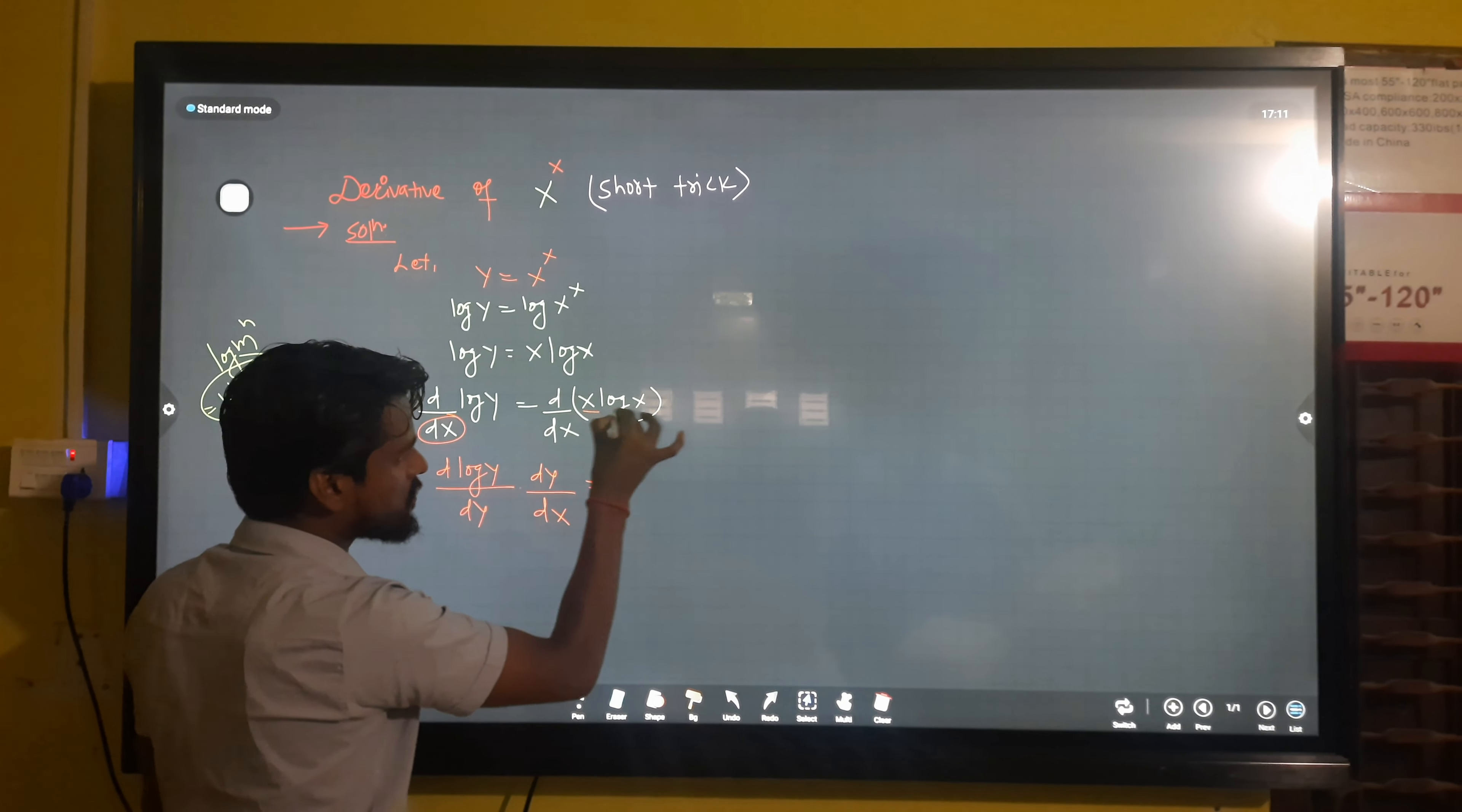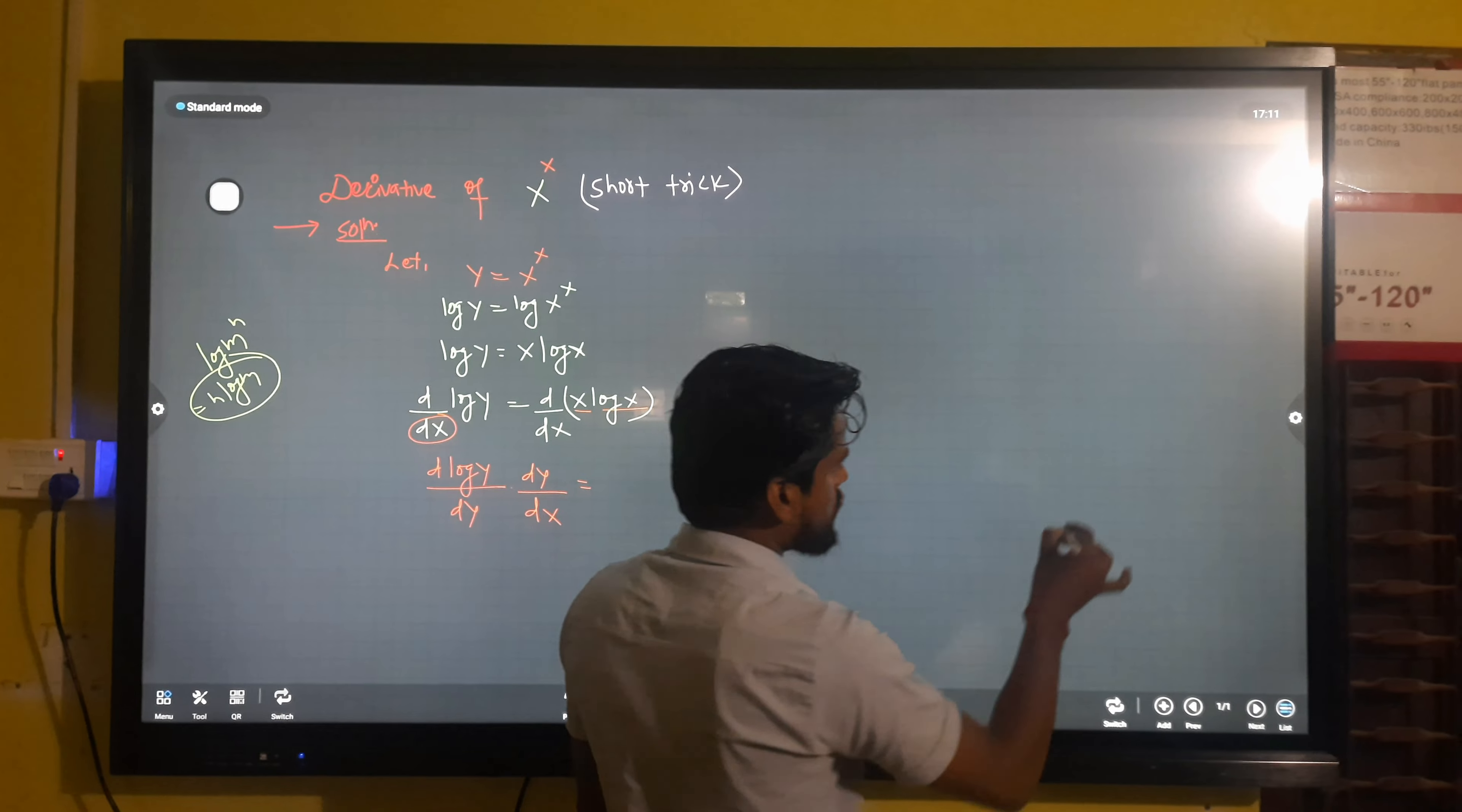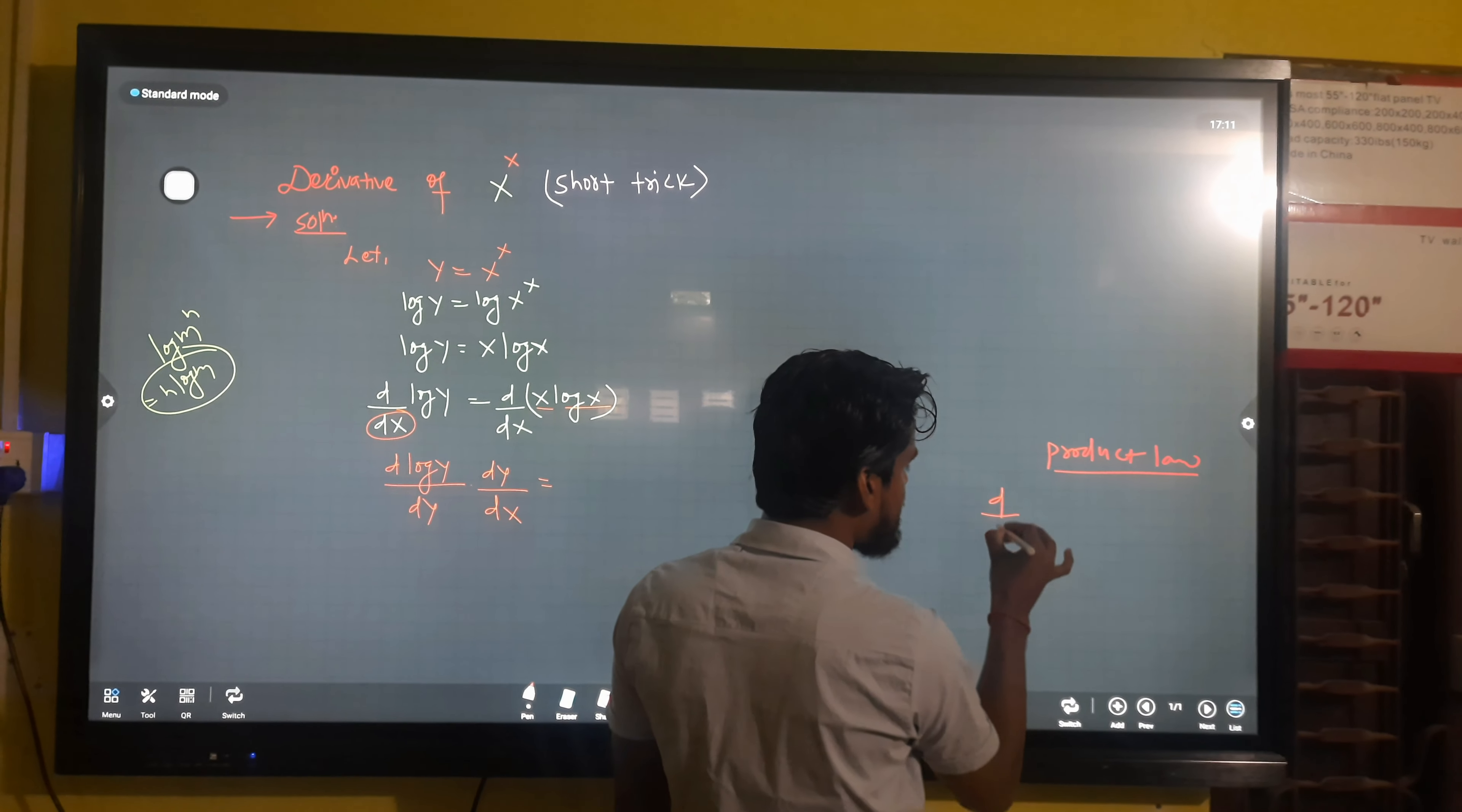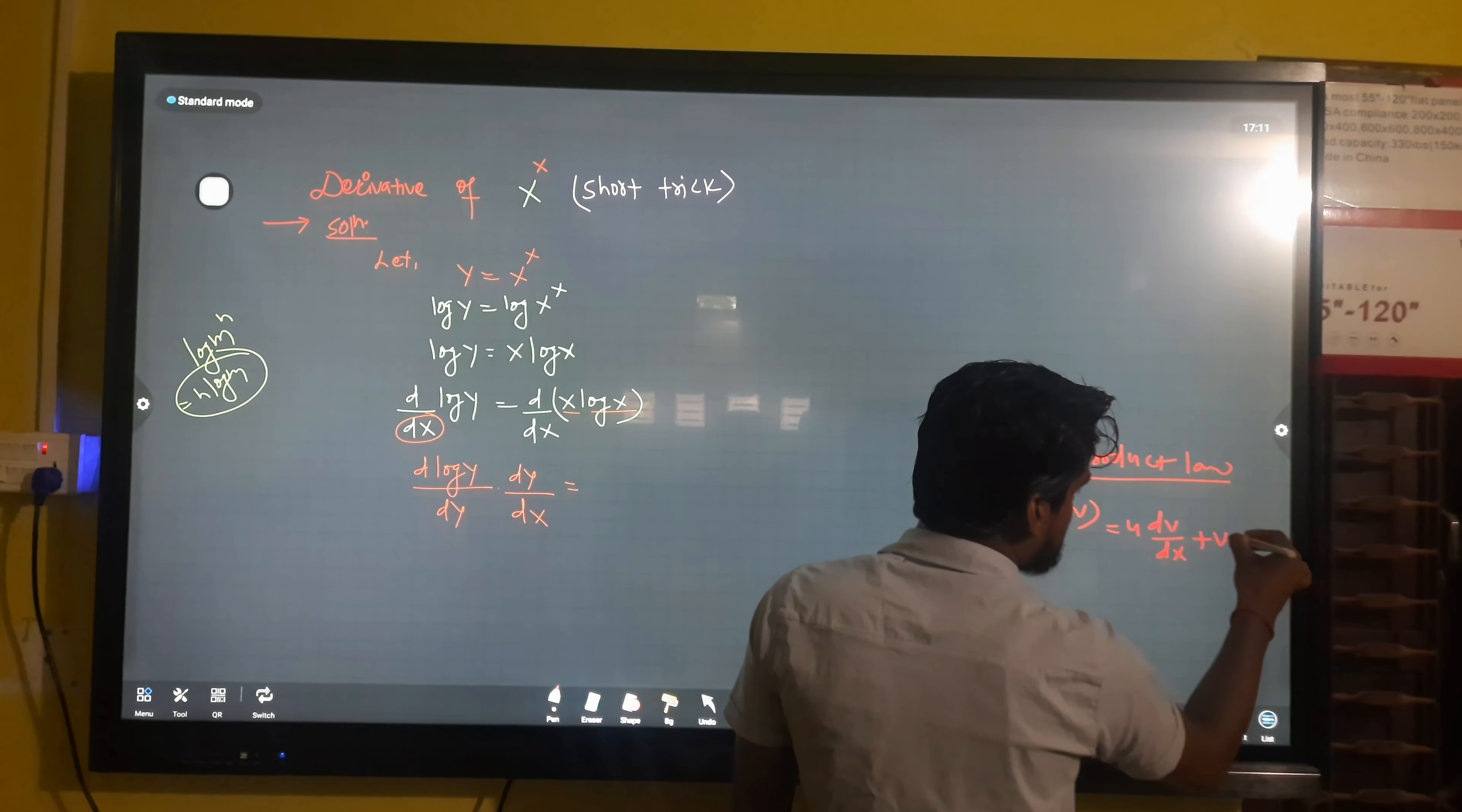Remember the product rule in derivatives: if we have d by dx of u times v, the formula is u dv by dx plus v du by dx.